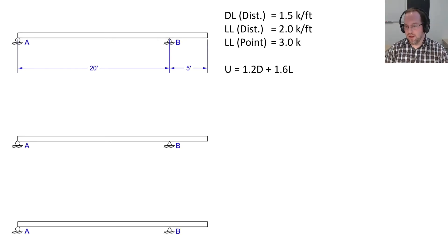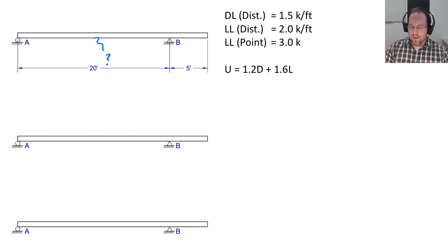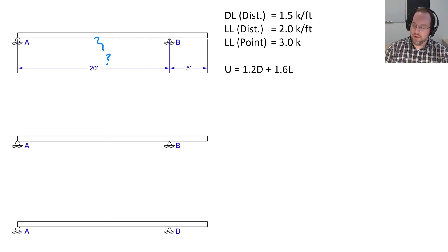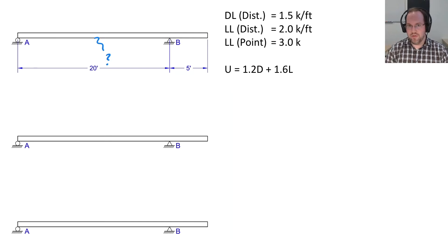To introduce this concept of design envelopes, let's take a simple structure here where I have a 20-foot main span and a five-foot cantilever. Let's say I'm interested in my maximum demands at this point right here. I'm going to consider dead load and live load in combination: dead load will be 1.5 kips per foot as a distributed load, live load will be a 2 kip per foot distributed load plus a 3 kip point load located somewhere on the structure, combined using factors of 1.2 dead plus 1.6 live.